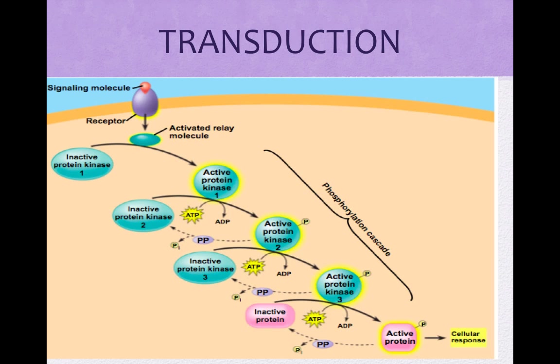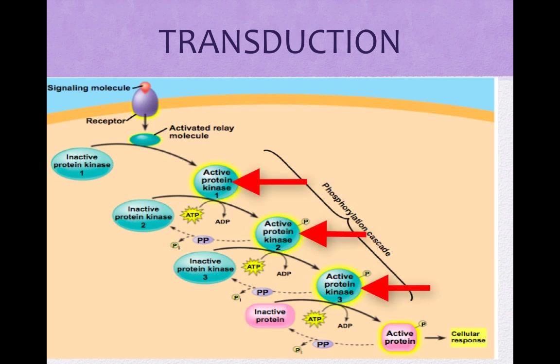In signal transduction pathways, once the receptors are activated, the transduction phase is multi-step. This process can multiply the effect. These pathways relay signals from the receptor to result in a cellular response — it's like dominoes. The activated receptor activates another protein, which activates another, and so on, until the final response is achieved.